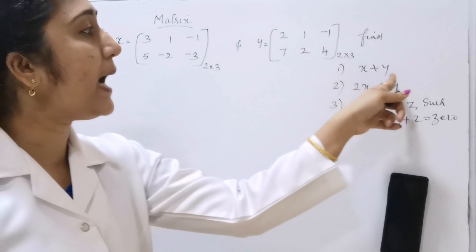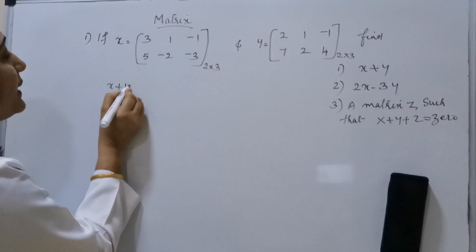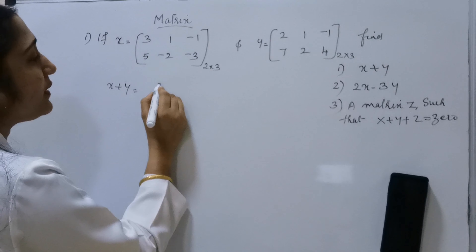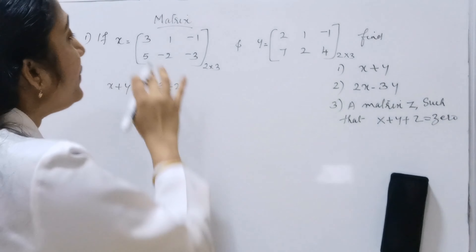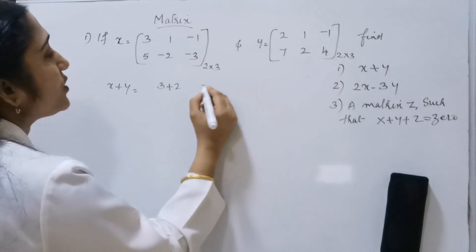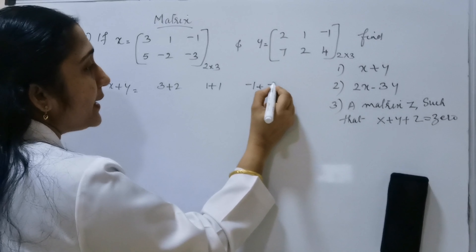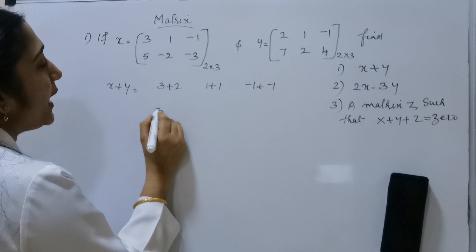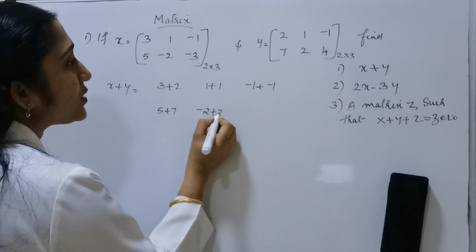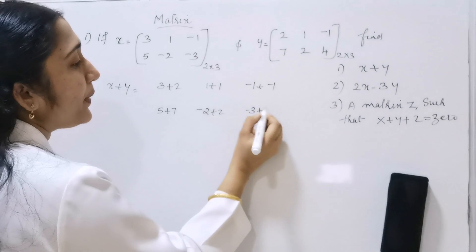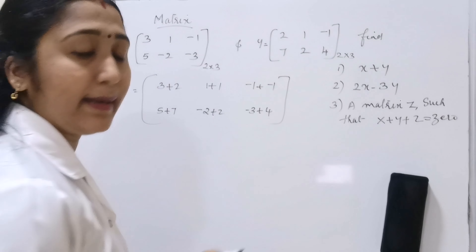First of all we have to find X plus Y. So X plus Y equals: we add the same corresponding elements of the two matrices — 3 plus 2, 1 plus 1, minus 1 plus minus 1. Next row: 5 plus 7, minus 2 plus 2, minus 3 plus 4. We are adding the same elements of the two matrices.